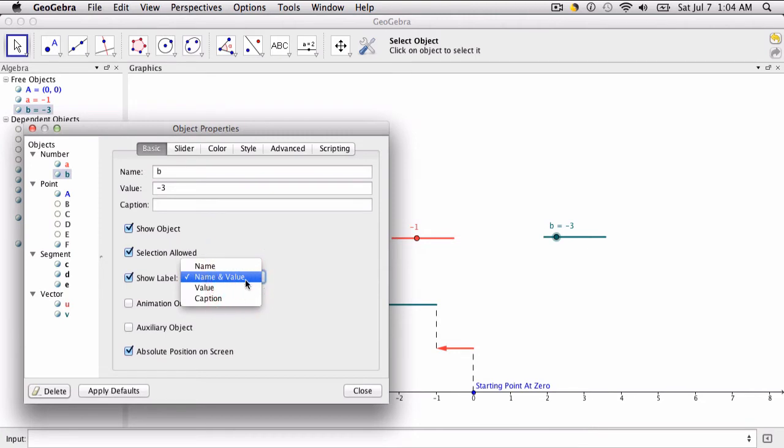And these are variables, so they're always going to be changing, but I want only the value to be displayed.